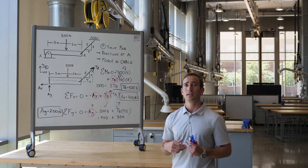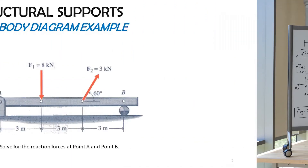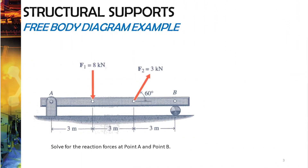Let's do another example problem to continue learning about 2D rigid body equilibrium. Before we go over the solution, I want you to take a crack at it. Take everything you just learned and try to apply it to this next example. The question asks you to solve for the reactions at point A and point B. Set up your free body diagram and system of equations, and see if you can solve for the unknowns. Pause your video, work on the problem, and then I'll go over the solution.